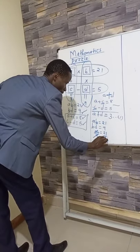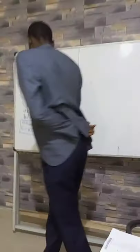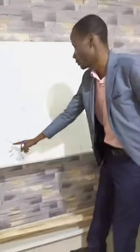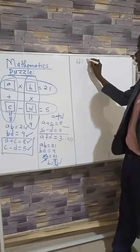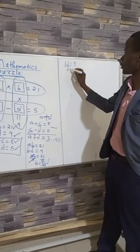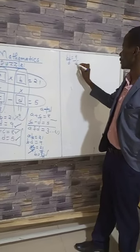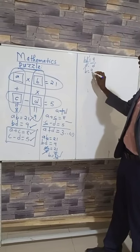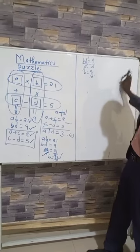From B times D equals 9, we need to remain with B, so B is equal to 9 over D. Now we have two expressions for B: B equals 9 over D, and B equals 21 over A.